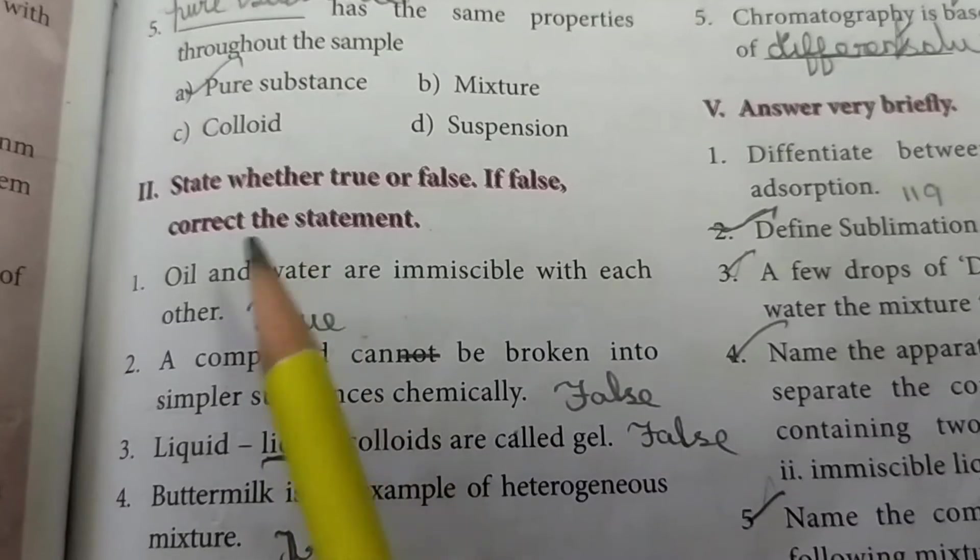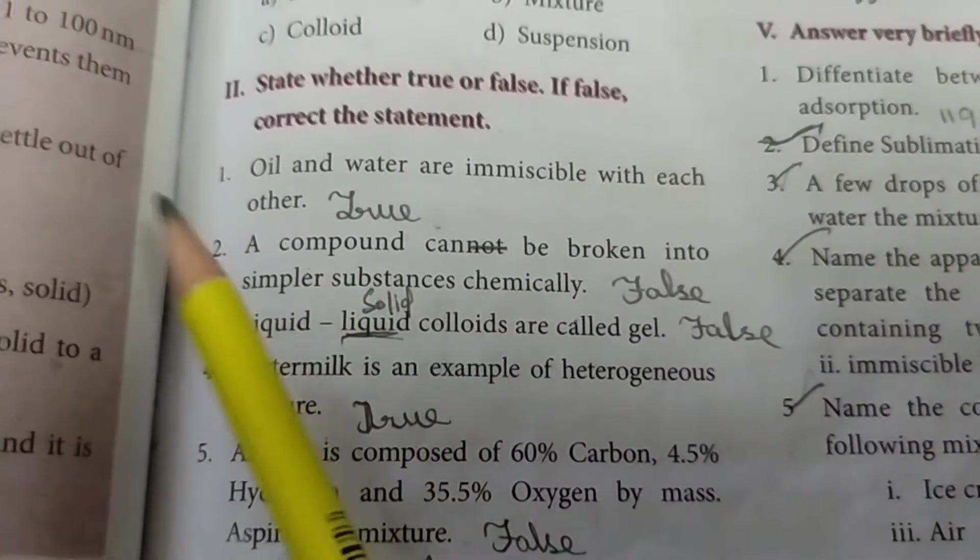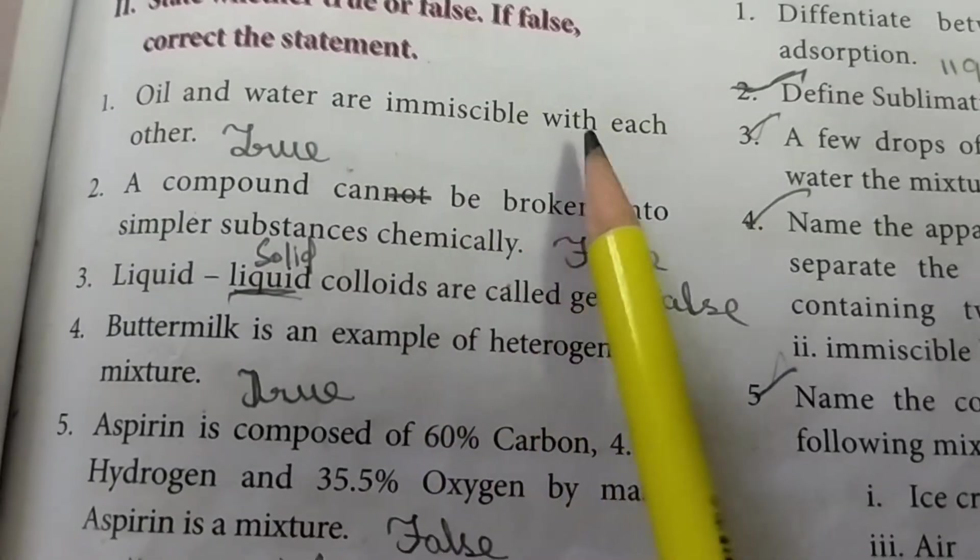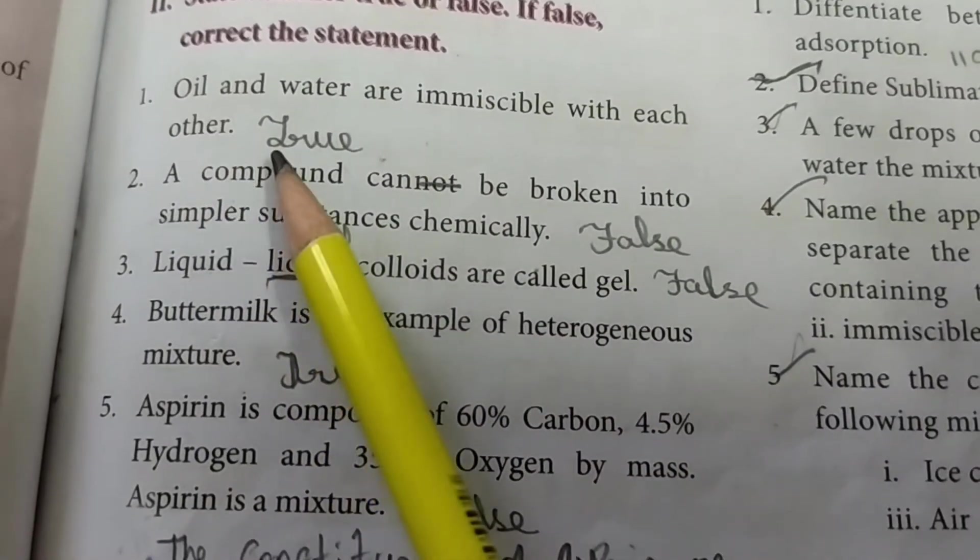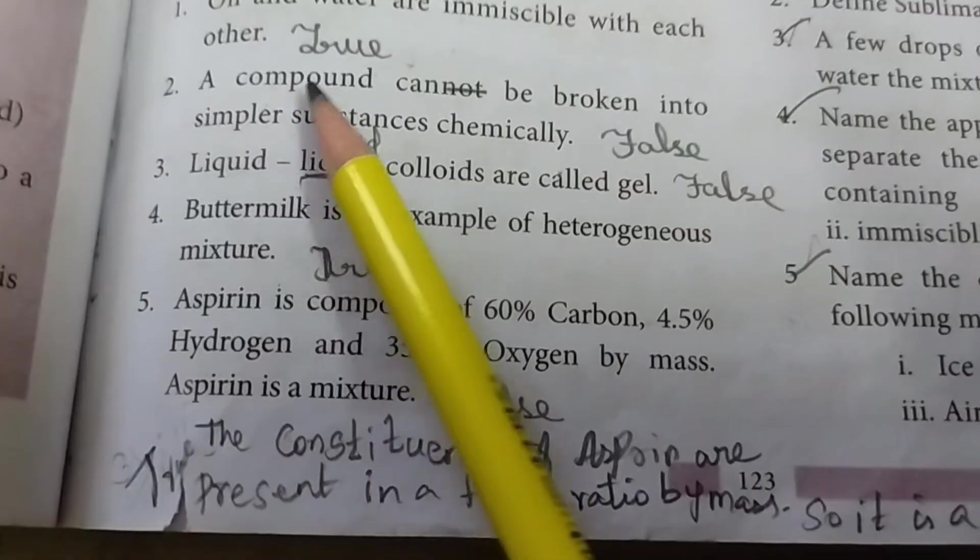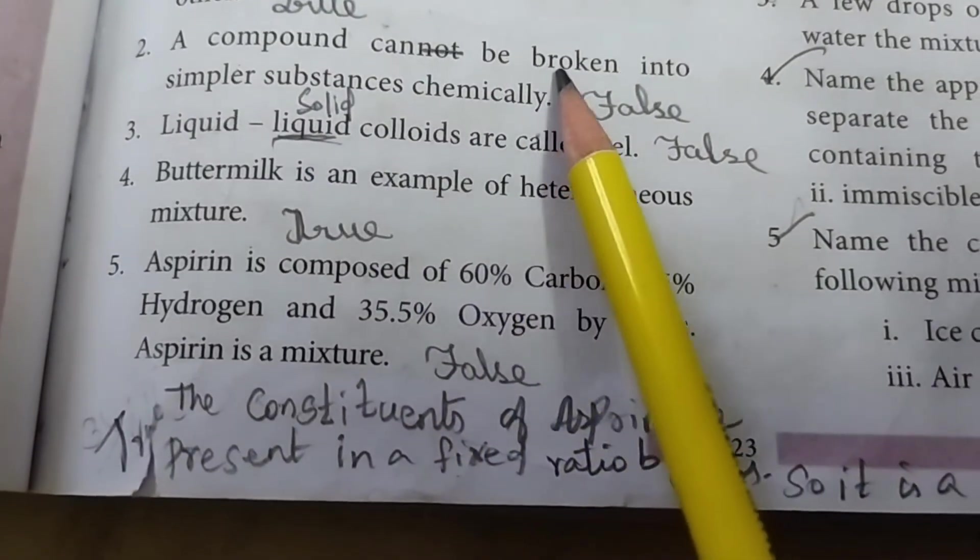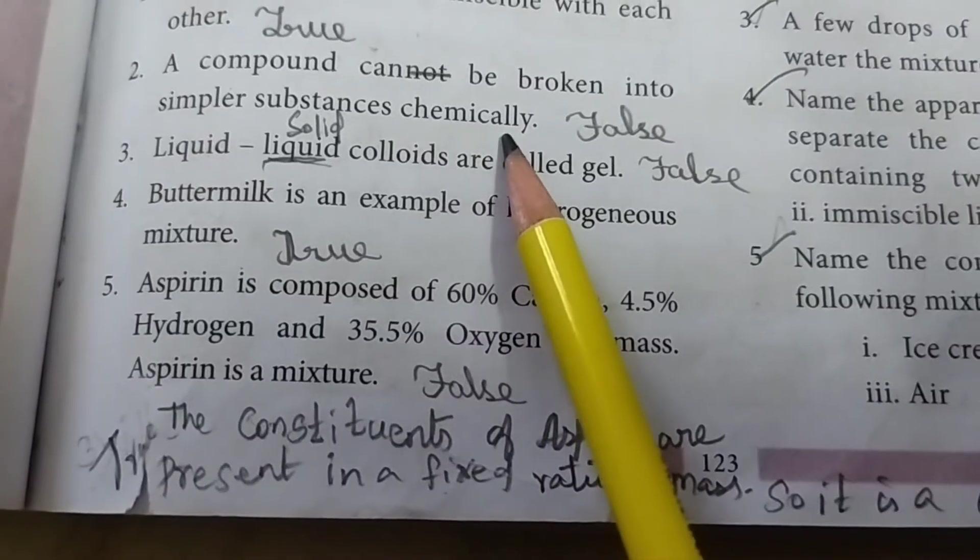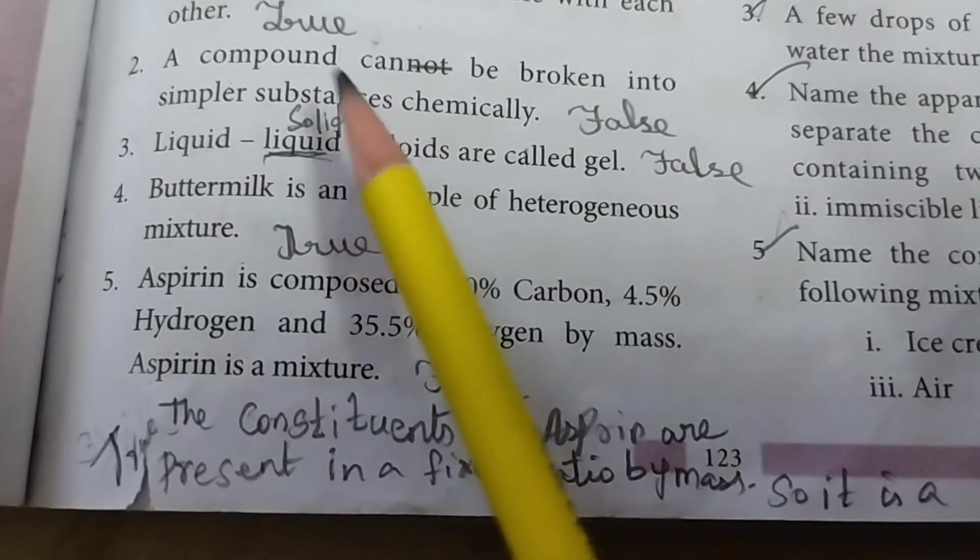State whether true or false, if false correct the statement. First: Oil and water are immiscible with each other - true. Second: A compound cannot be broken into simpler substances chemically - the answer is false. The correct statement: A compound can be broken.